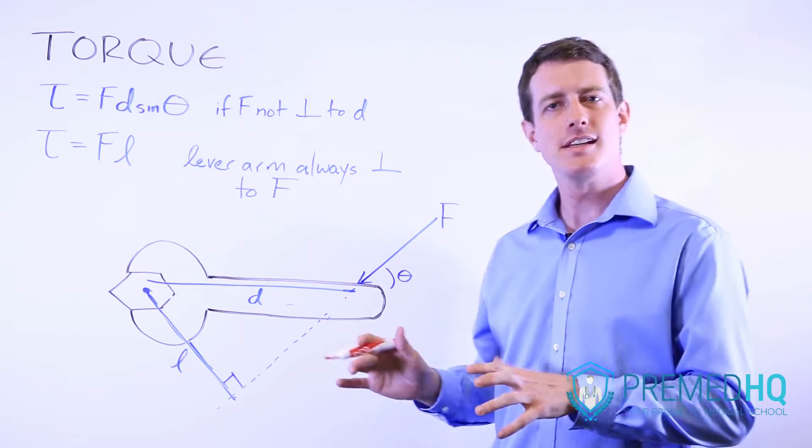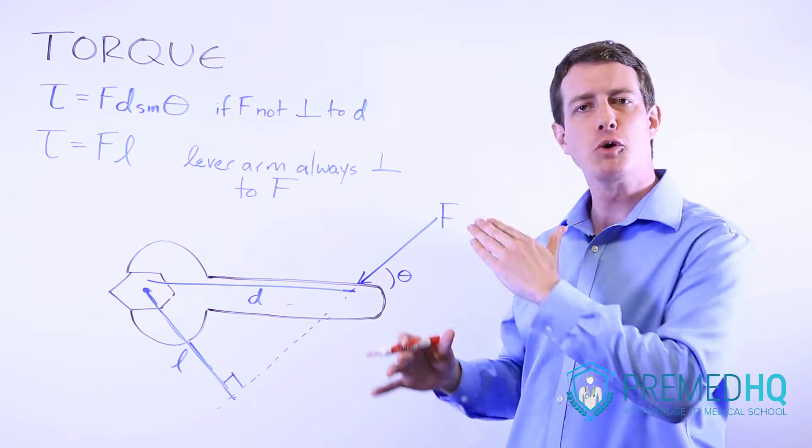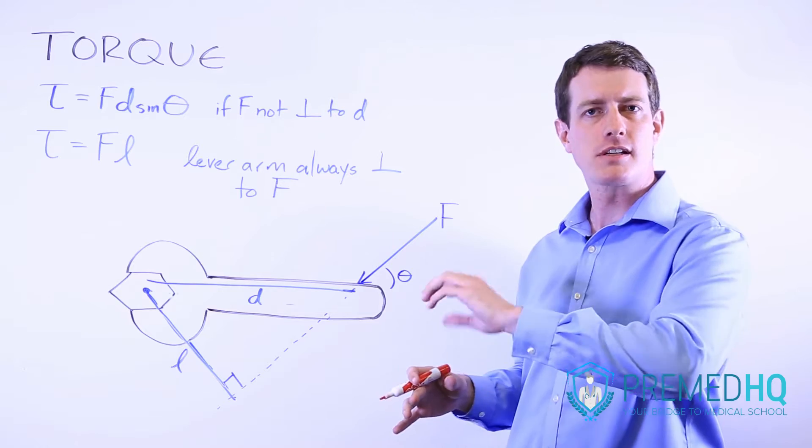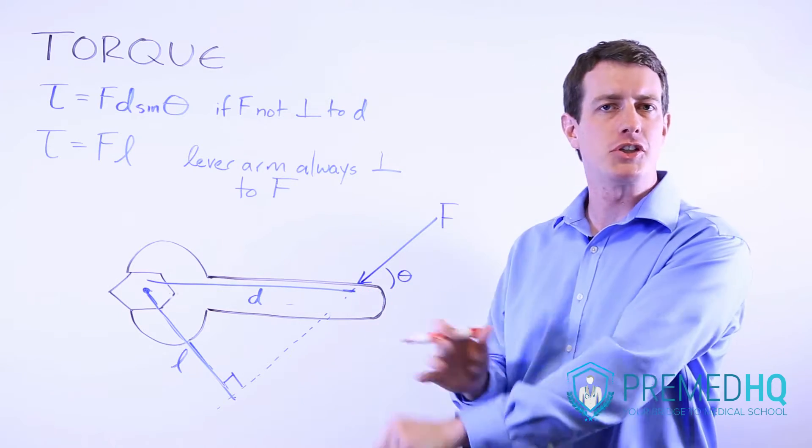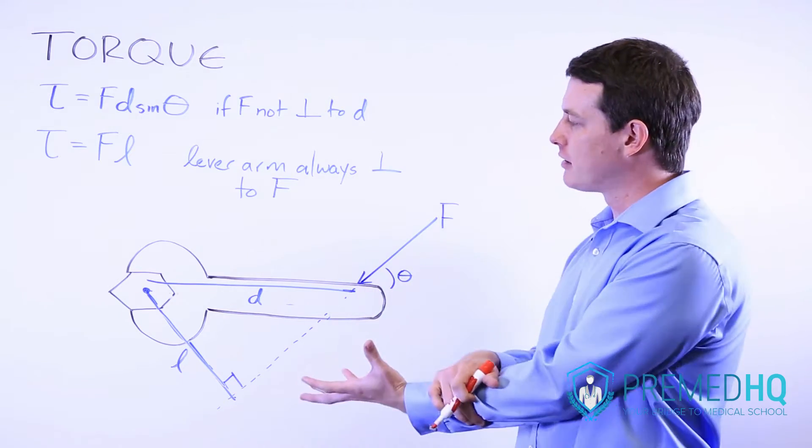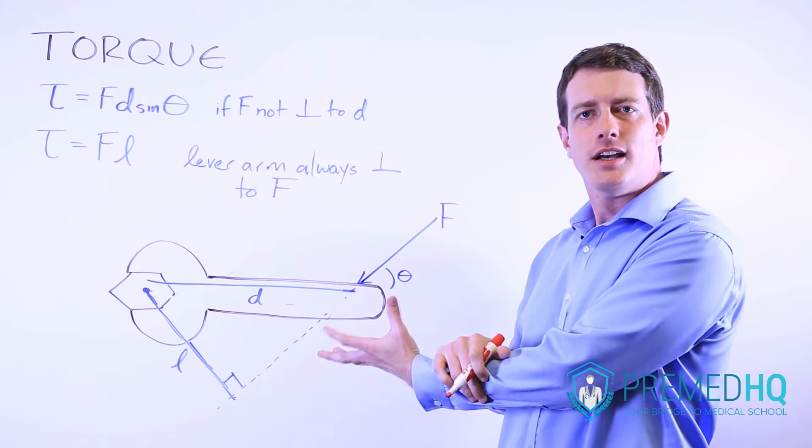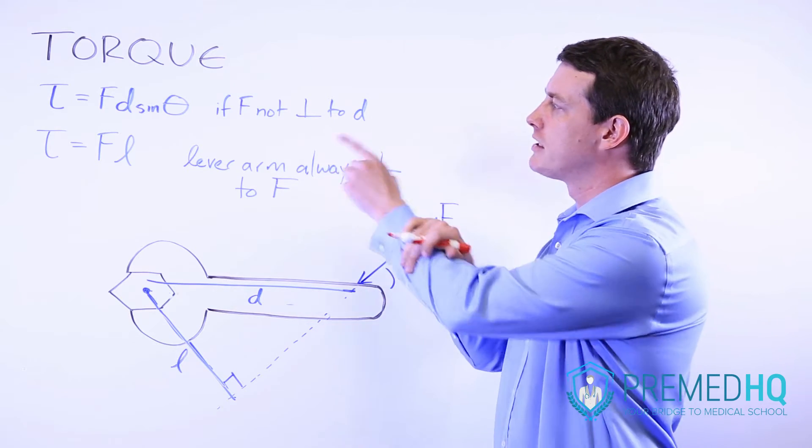Torque or moment is the tendency of a force to rotate something around some central point of rotation, and it's often depicted with a wrench, which is what we've drawn here. It can be described using two formulas.